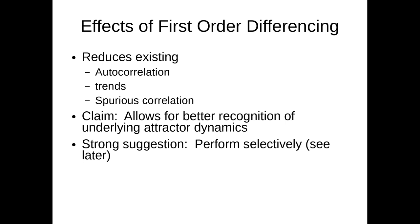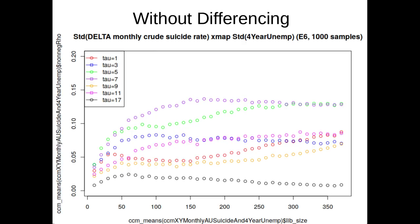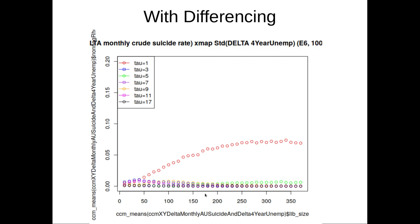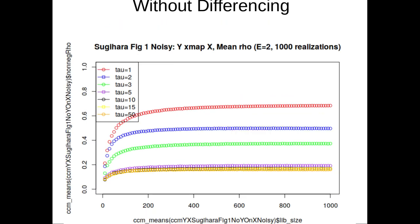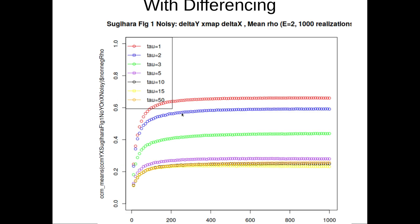This type of analysis is used by Sugihara a lot. I find it quite helpful. You'll notice that without it, sometimes you can have, this is for some data we got from Andrew for unemployment and monthly crude suicide rate. This is for different values of tau, without first differencing and with first differencing. It can really make it much less sensitive to tau.